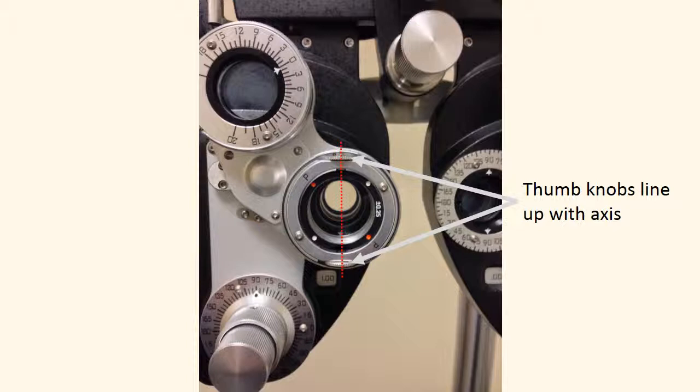If we were starting out with another axis, let's say we were starting out at the 180 axis, in that case, our thumb knobs would line up horizontally. If we were starting out at, let's say, the 135 degree axis, then our thumb knobs would line up diagonally at the 135.